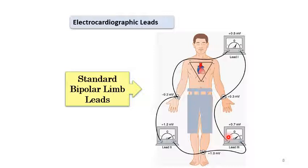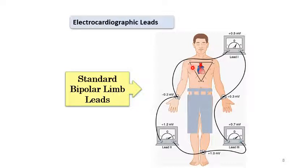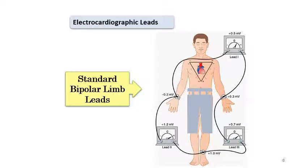We can draw these leads as a triangle with three sides. For lead one, positive is on the left and negative on the right. For lead two, negative is on the right arm and positive inferiorly at the left leg. For lead three, positive is on the left leg and negative on the left arm.